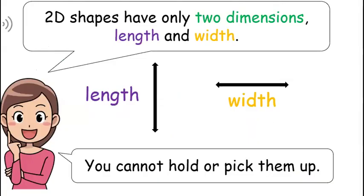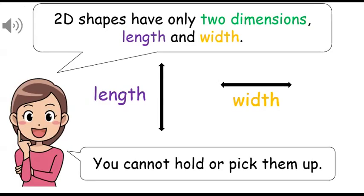2D shapes have only two dimensions: length and width. You cannot hold or pick them up.